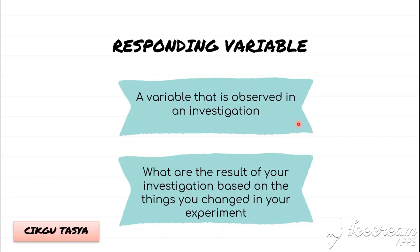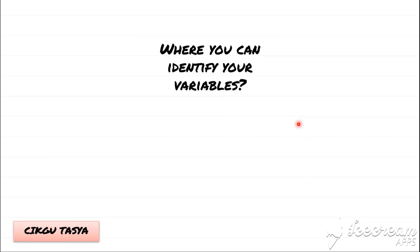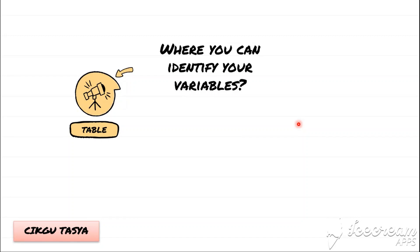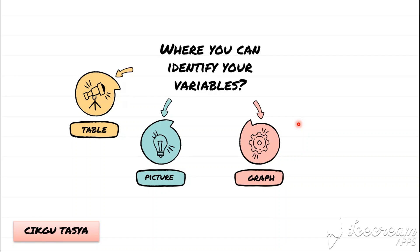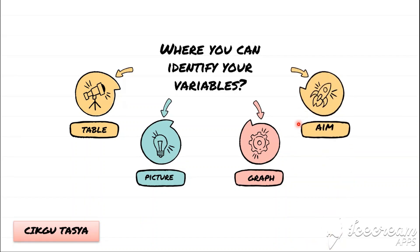Now where can you identify your variables? You can normally be given a picture and asked to identify the variables. But there are ways to find your variables — you can find variables from tables, and I will show you one way using a graph as well. From these sources, you can normally identify your Manipulative Variable and Responding Variable.